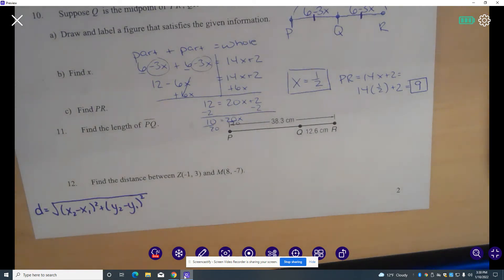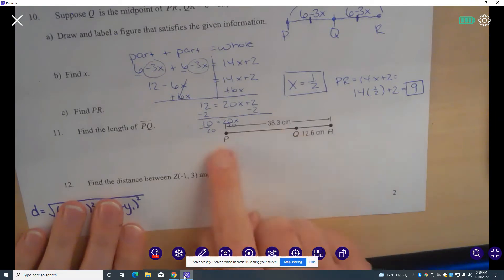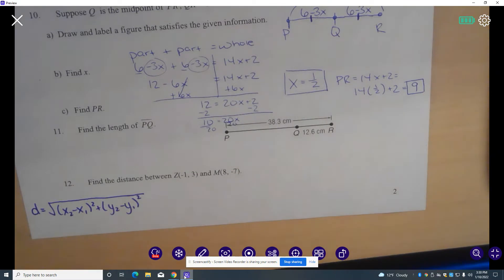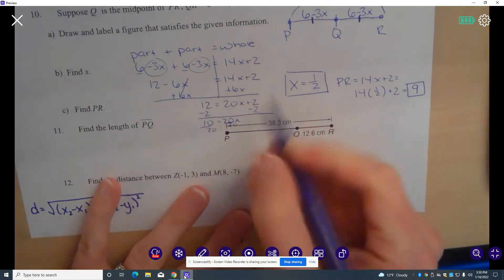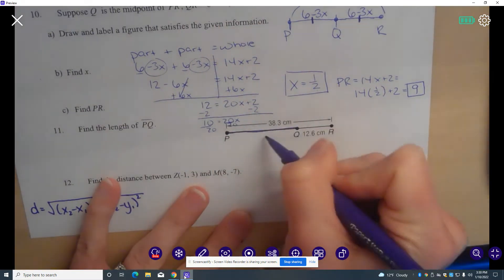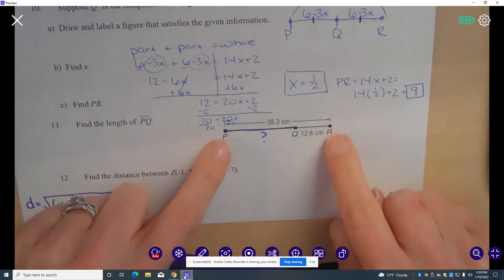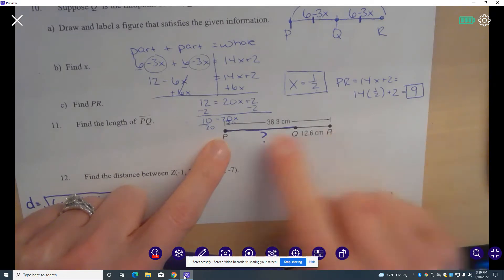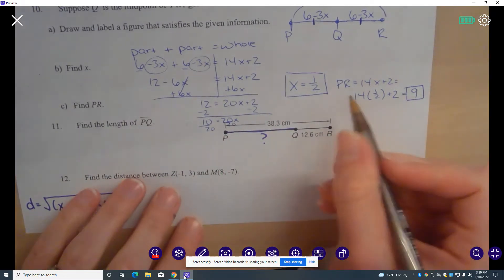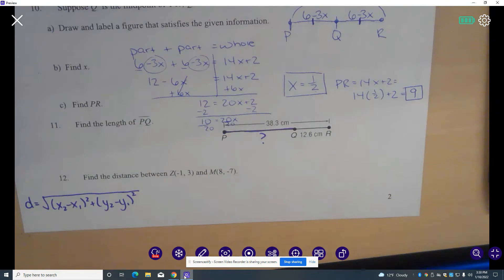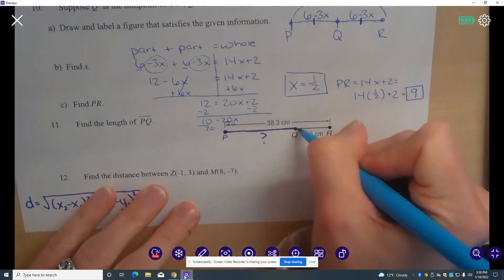We're at the bottom of page 2 on the final exam review, and we're going to do numbers 11 and 12. Number 11, I kind of ran into the picture from my previous problem, but we're going to use this picture here to find the length of PQ. So we want the length from P to Q. We don't know what that is. We want to find it. What we do know is the total length of PR, which is 38.3, and we know this length of QR is 12.6.